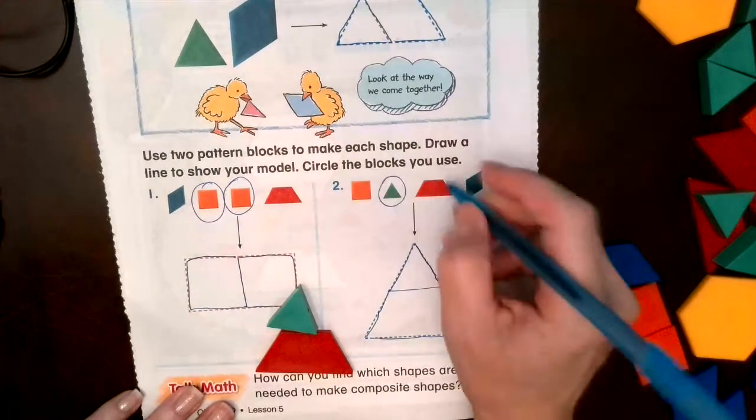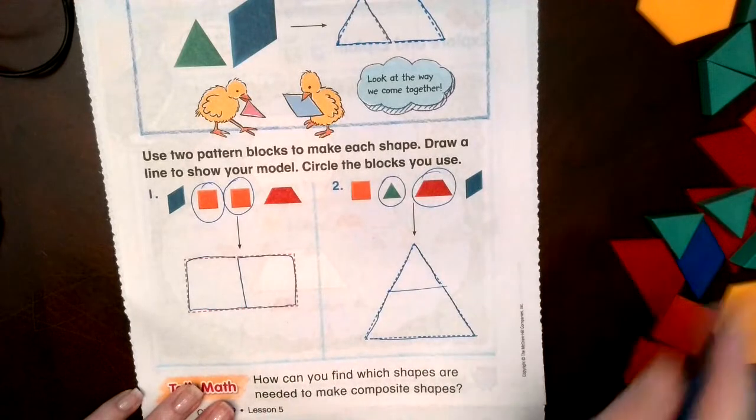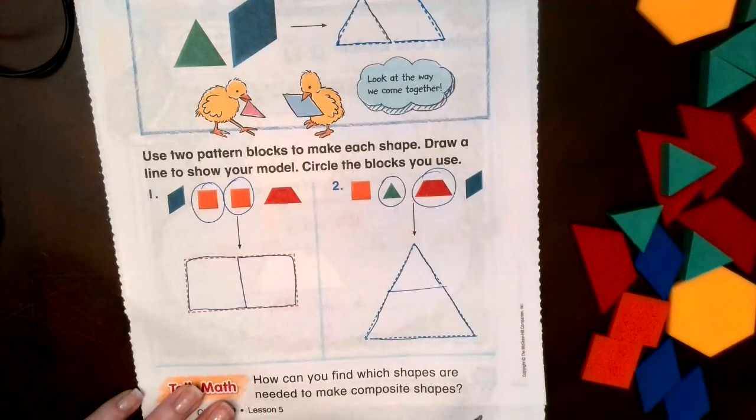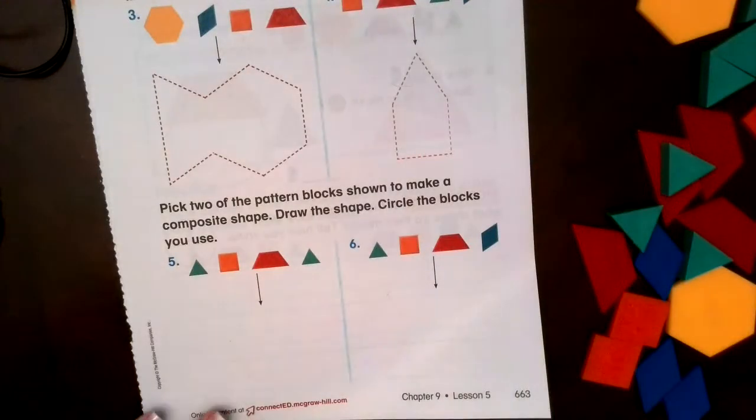And then down here we use the trapezoid. So we used one triangle, one trapezoid. So using shapes to make other shapes is called a composite shape.